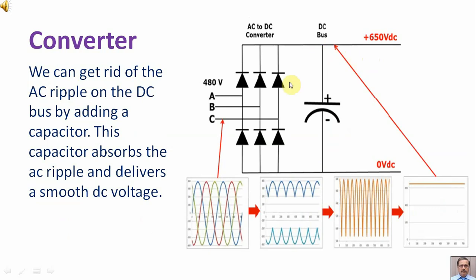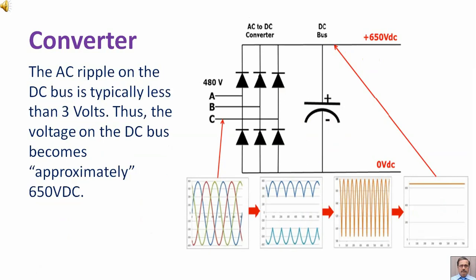We can get rid of the AC ripple on the DC bus by adding a capacitor. This capacitor absorbs the AC ripple and delivers a smooth DC voltage. The AC ripple on the DC bus is typically less than 3 volts, thus the voltage on the DC bus becomes approximately 650 volts DC.